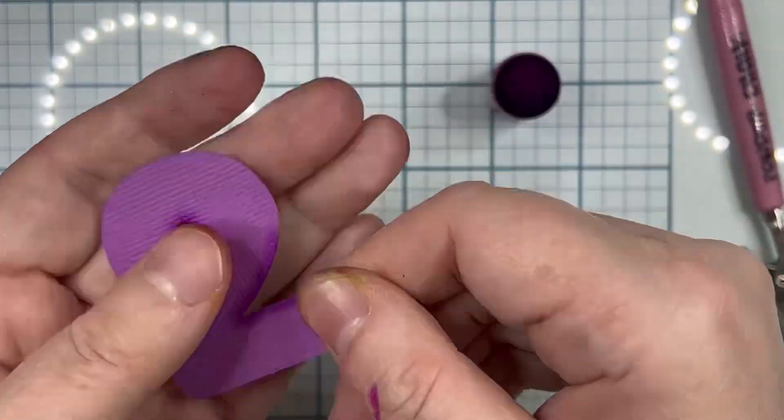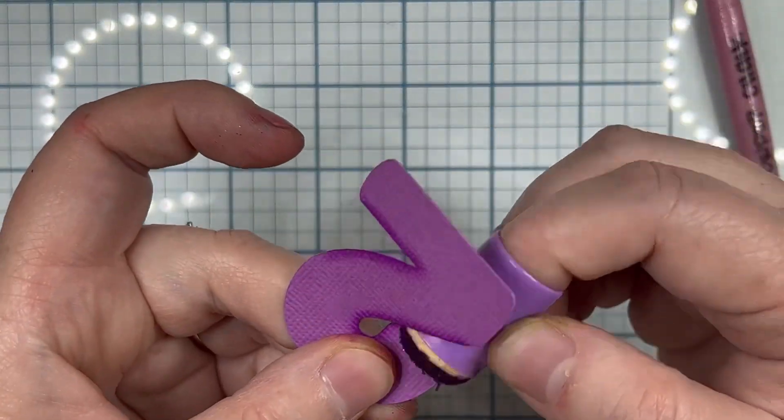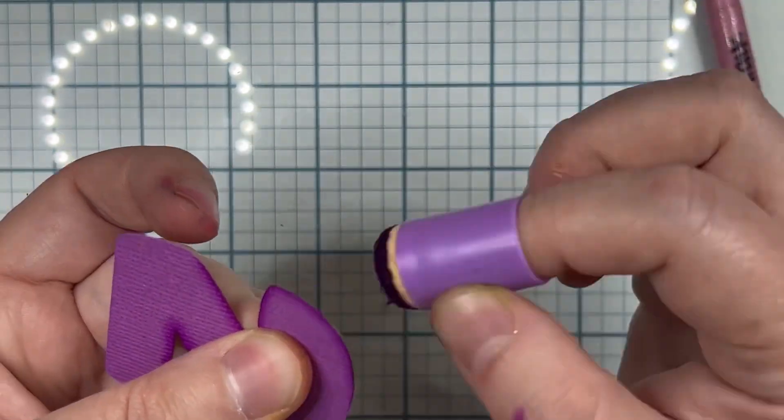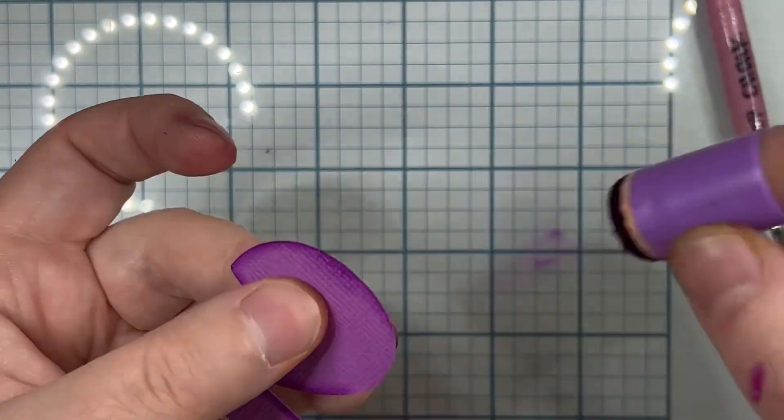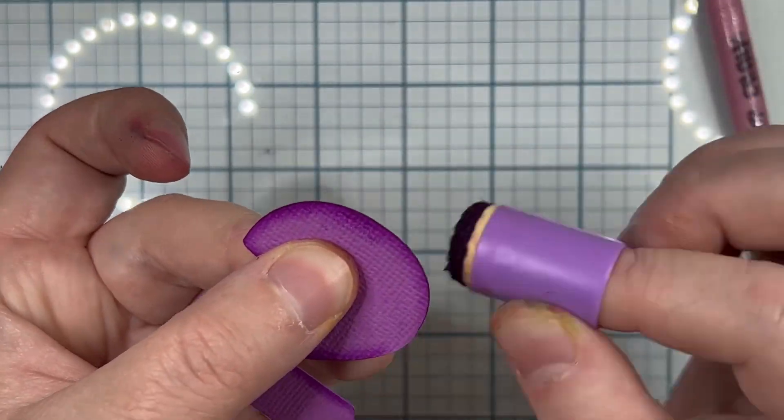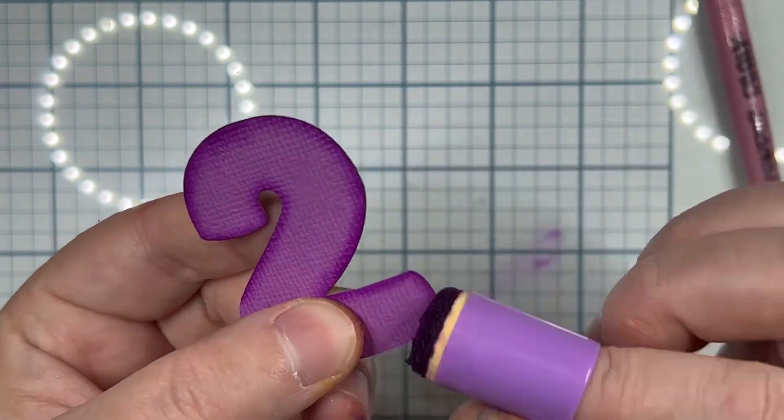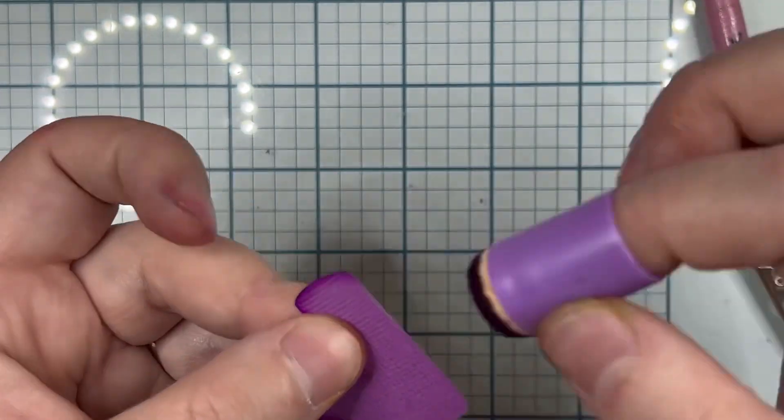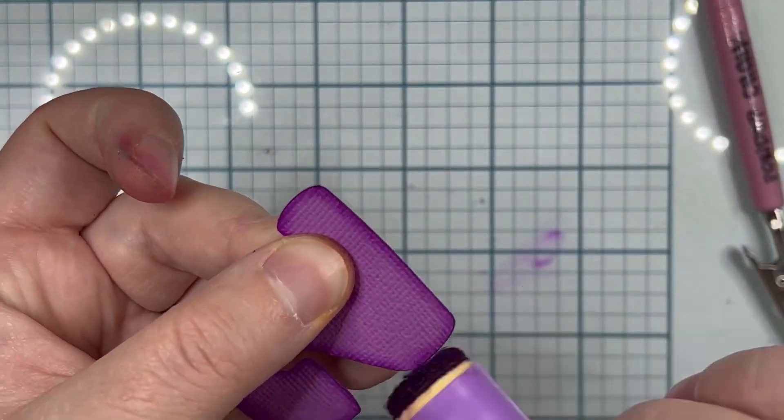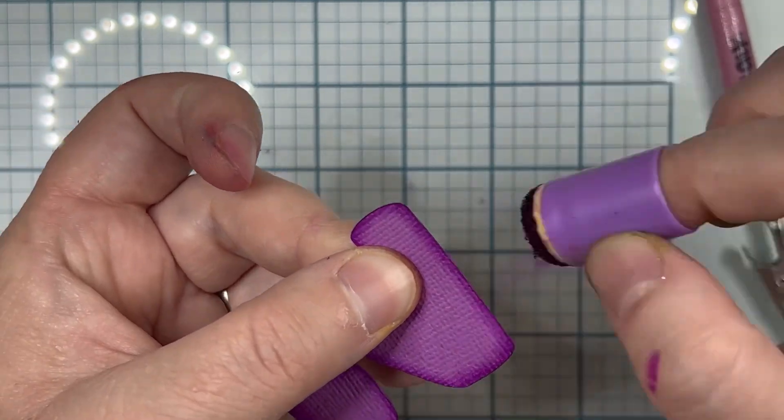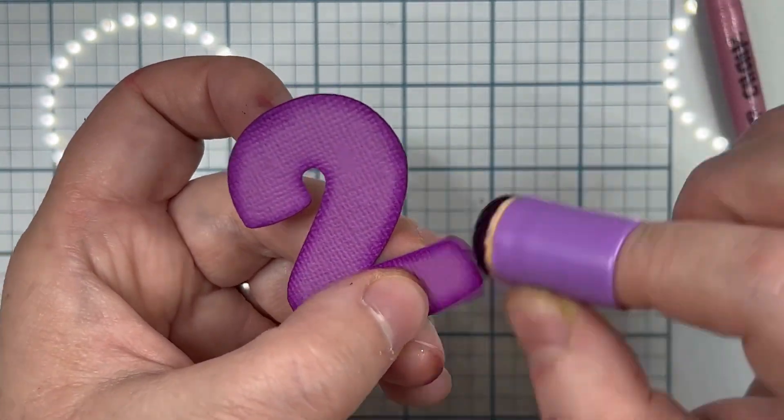Right now I'm showing you how I get in the crevices, nooks, and crannies of all the pieces using a pom-pom and an alligator clip. I get into all the spots that my finger dauber won't reach, then I go around the edges with my finger dauber and re-ink over where I went with the pom-pom.